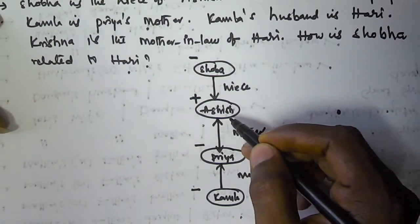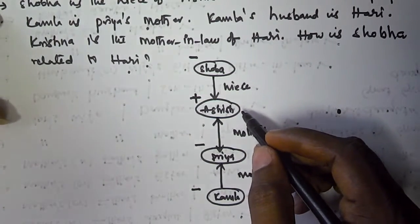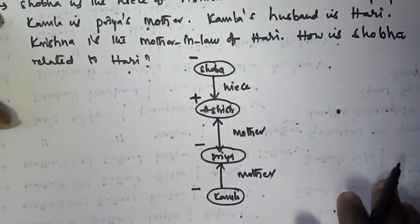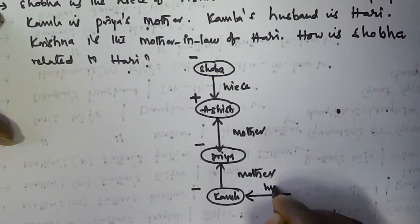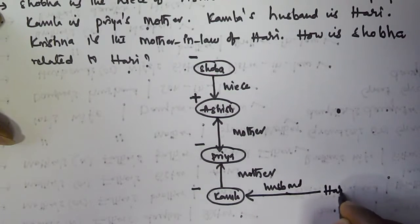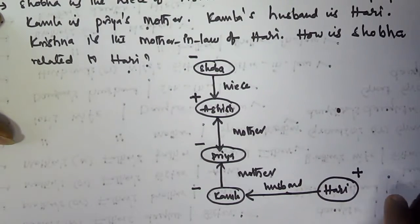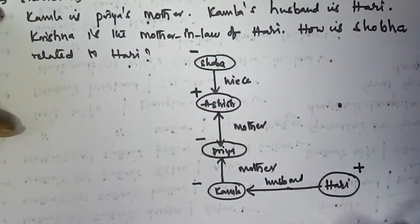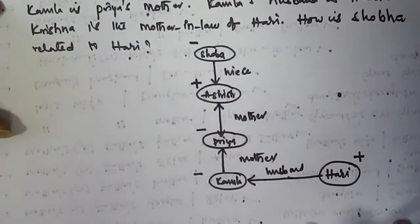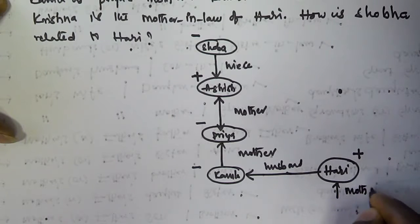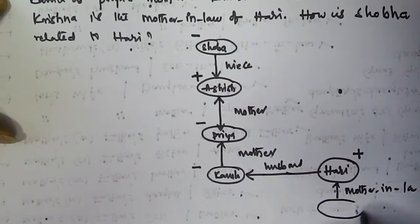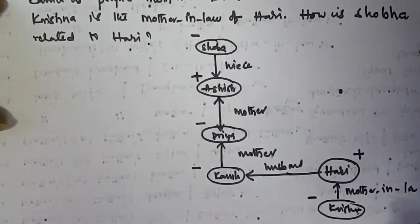Shobha is the niece of Ashish. And it is given that Kamala's husband is Hari. So Hari is a male, and I am using a positive sign here. Hari is the husband of Kamala. And it is given that Krishna is the mother-in-law of Hari. Krishna is the mother-in-law of Hari, so she is negative because she is a female.